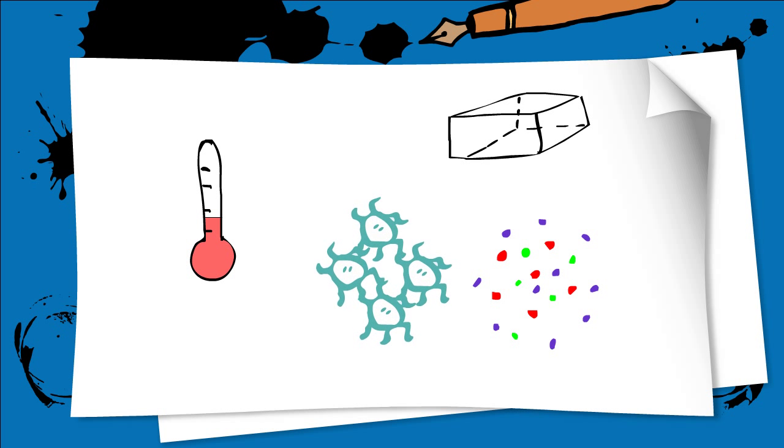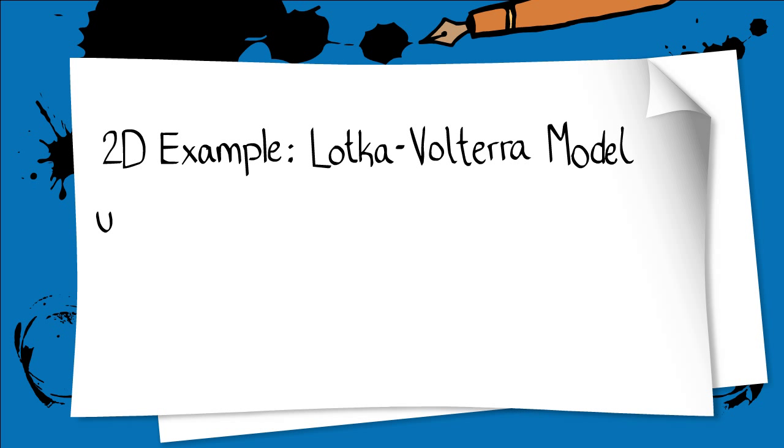For example, let us consider a two-dimensional predator-prey model known as the Lotka-Volterra model. Here, u equals the number of prey, and v equals the number of predators, and the system is described by the equations on the screen.